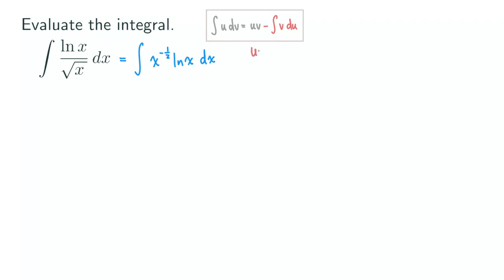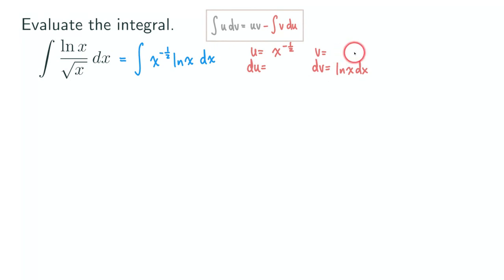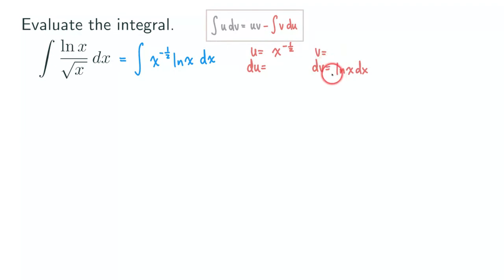We are going to set up our table here: we have u, du, v, and dv. We usually let u be the power function, so let's try that. If we let u be x to the 1/2, and then let dv be ln(x) dx, we actually run into a problem because we need to find the antiderivative of ln(x). If you know the antiderivative of ln(x) you can continue, but if you don't, you'd need to figure that out first. The integral of ln(x) also requires integration by parts to integrate, and we don't really want to do another integration by parts just to find v.